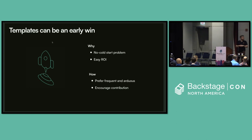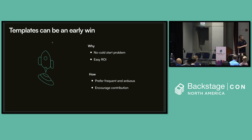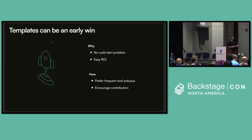There's also an easy-to-calculate ROI for scaffolder templates. If you take a job that used to take two months, make it 15 minutes, multiply that by the number of times it's run each year and something close to what an engineer costs, you can basically report upwards that you saved hundreds of thousands of dollars with the scaffolder. That's good when you're trying to adopt a new technology — you want an early win to continue investing in other features of Backstage.